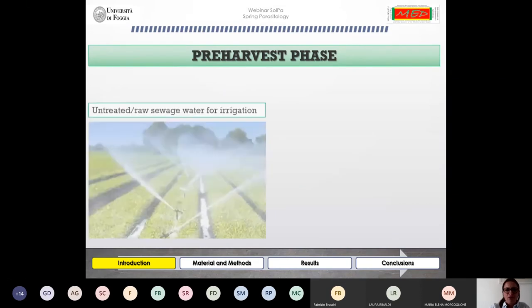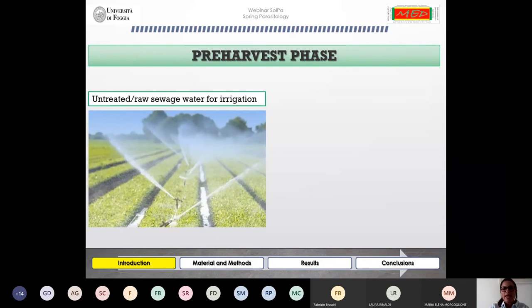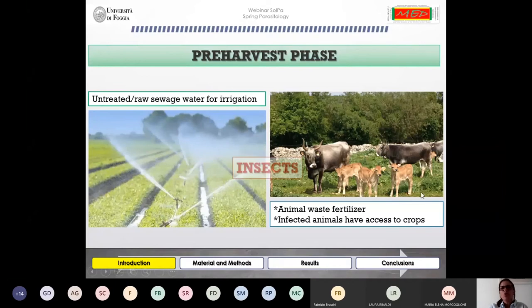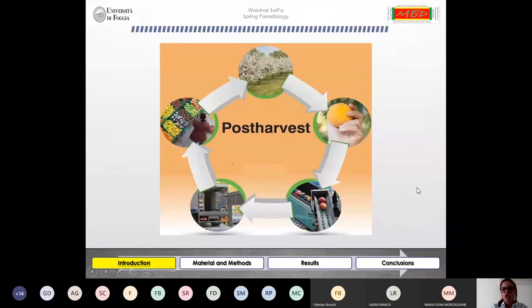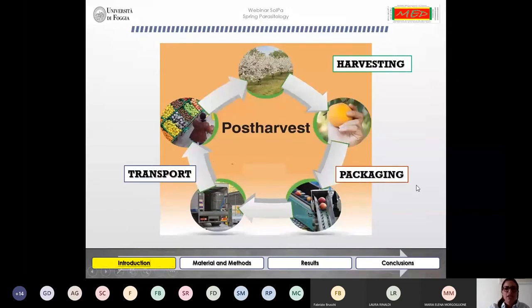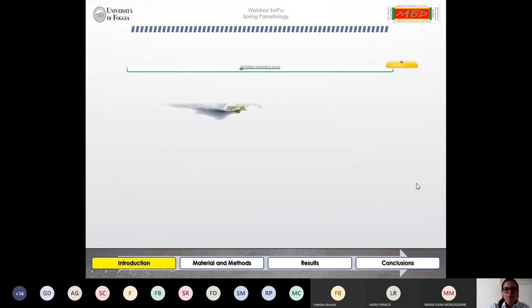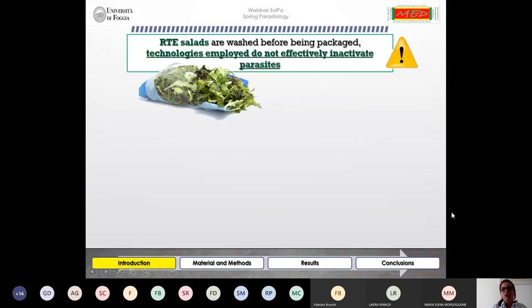Contamination can occur during the pre-harvest phase when untreated or raw sewage water is used for irrigation, when animal waste is used as fertilizer, when infected animals have access to crops, or via insects. In addition, contamination can occur in the post-harvest phase during harvesting, packaging, transport, and home and market processing.